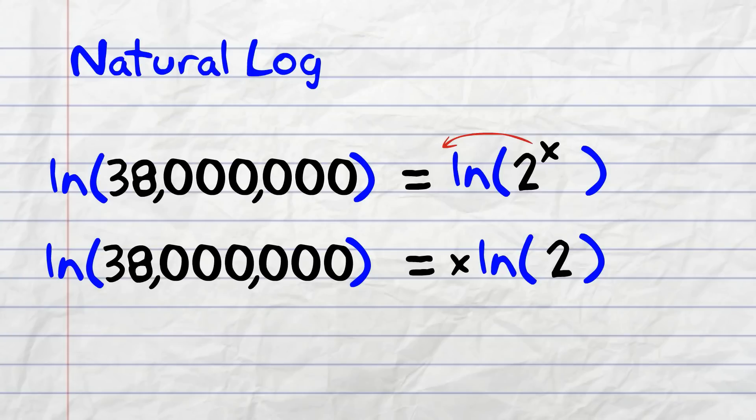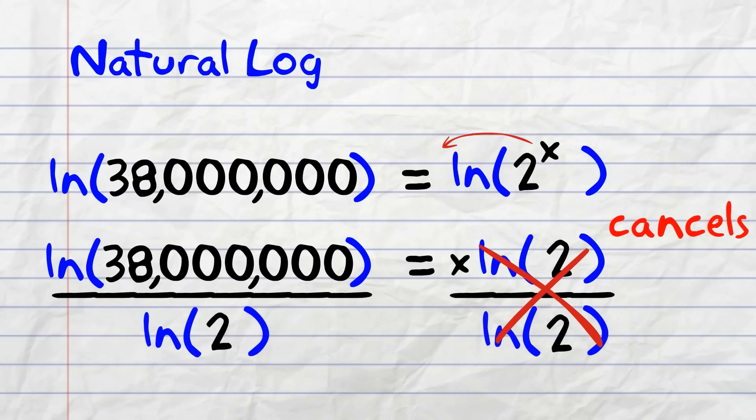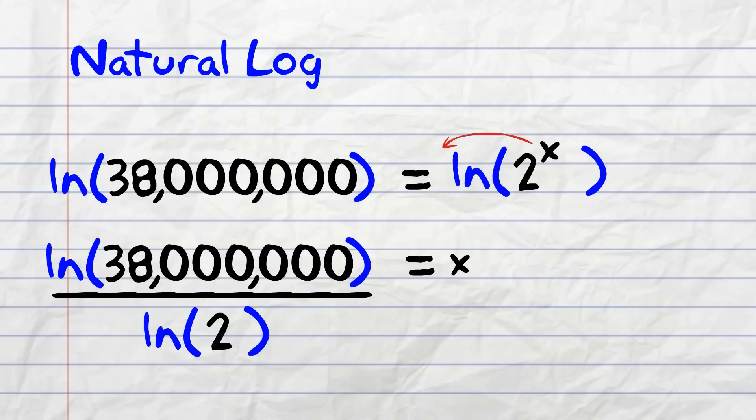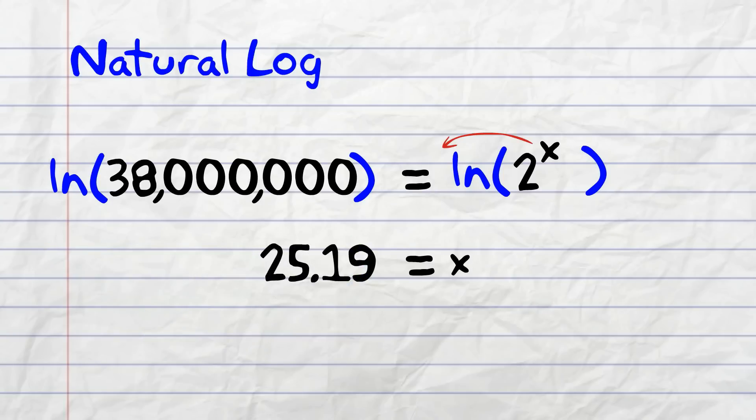Now, in order to solve for x, we need to divide both sides by the natural log of 2. You're going to have to use a calculator to do this. But when you do, the natural log of 38 million divided by the natural log of 2 is about 25.19.